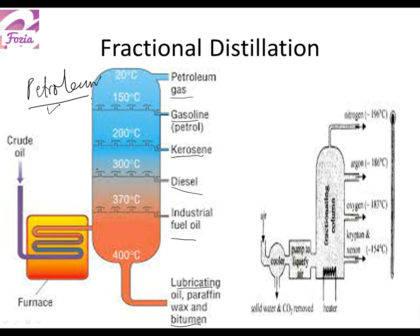At different boiling points, these fractions are collected in separate vessels. We can also distill air. Normal air is cooled and then distilled in an industry to get oxygen, noble gases, and nitrogen. This is how we can get the constituent gases out of the mixture of air. On a very large scale, we perform the process of distillation to separate the mixture constituents.